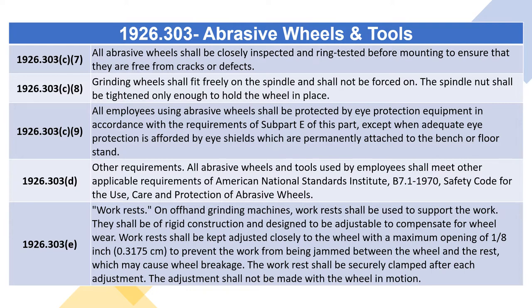1926.303(c)(7): All abrasive wheels shall be closely inspected and ring tested before mounting to ensure that they are free from cracks or defects. 1926.303(c)(8): Grinding wheels shall fit freely on the spindle and shall not be forced on. The spindle nut shall be tightened only enough to hold the wheel in place. 1926.303(c)(9): All employees using abrasive wheels shall be protected by eye protection equipment in accordance with subpart E, except when adequate eye protection is afforded by eye shields permanently attached to the bench or floor stand.